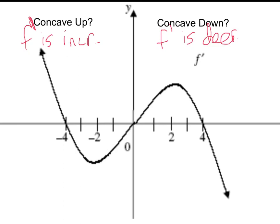So, it's increasing here from negative 2 to positive 2. So, that's where we're concave up. And, of course, decreasing from negative infinity to negative 2, and from 2 to infinity.